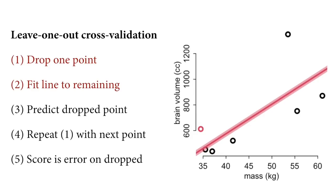Let's take these seven points and think about what happens when we leave each of them out of the sample and then fit a function to the remaining six points. This is a way of thinking about prediction. We're going to take one of these species, set it aside — step one is to drop one point. The red point on the right is the one we've dropped. The remaining black points stay in the sample, and now we're going to fit a line, just an ordinary regression to the remaining six points. This procedure is called leave-one-out cross-validation, and it illustrates some very powerful things about how statistical model fitting works.